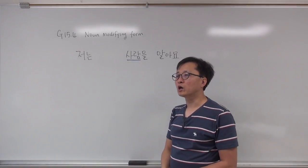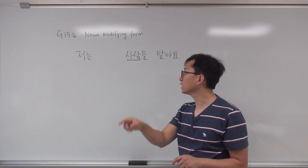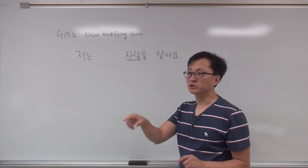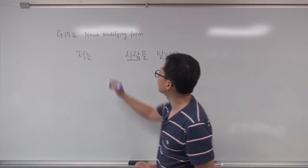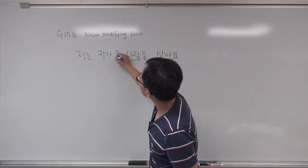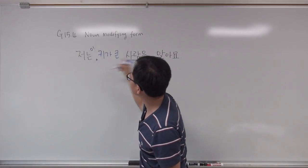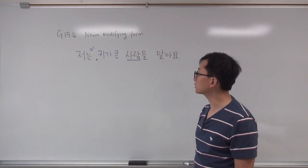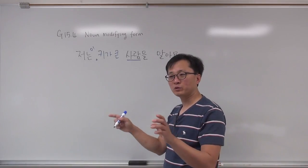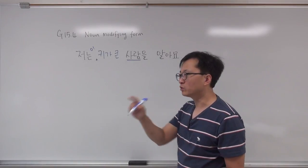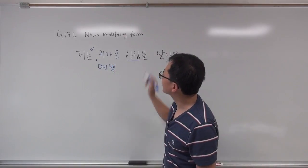For example, you are looking at a picture and you are describing a person. I know this tall person — 저는 키가 큰 사람을 알아요. So among them, there is a tall person. 키가 큰 사람을 알아요. Let's say there are a couple of people and one of them is really pretty. So I know this pretty person — 예쁜 사람을 알아요.